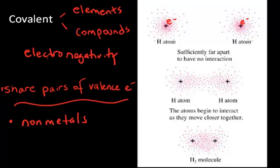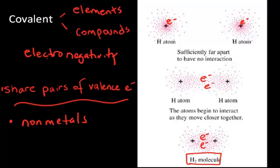But when you start bringing those two atoms together, the position of lowest energy for the electron is no longer equally dispersed around a sphere around the proton. Rather, there's more of a chance that you'll find the electrons between the two protons. And finally, at a certain distance, the two nuclei are essentially held together by sharing the two electrons — one from each of those atoms — and we end up with a diatomic hydrogen molecule.